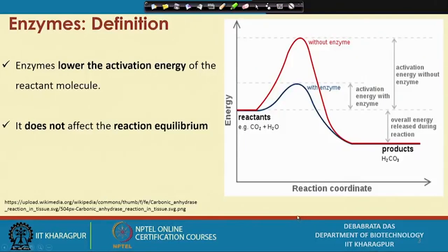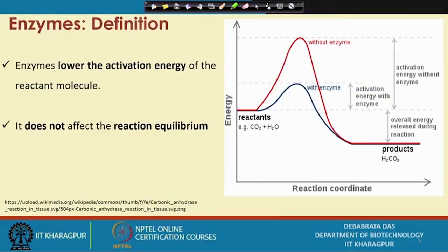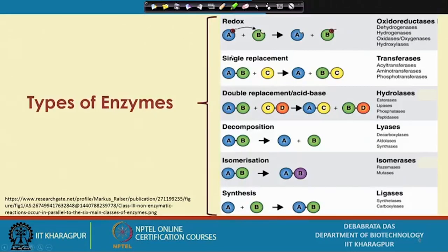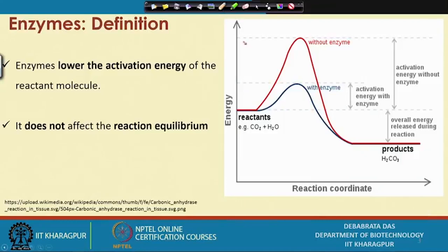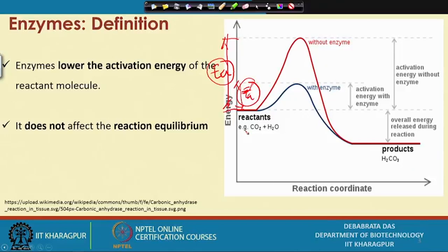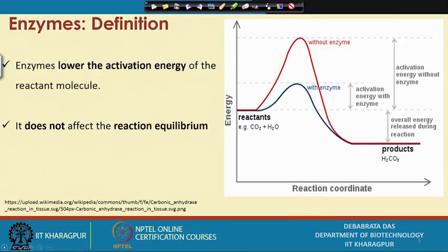Enzymes lower the activation energy. If you look at this figure, in a normal reaction a certain amount of activation energy is required. When an enzyme catalyst is present, the activation energy requirement is much less compared to Ea. Since the activation energy requirement is very low, the rate of reaction is accelerated. After the reaction is over the enzyme remains unaltered, and importantly it does not affect the reaction equilibrium.